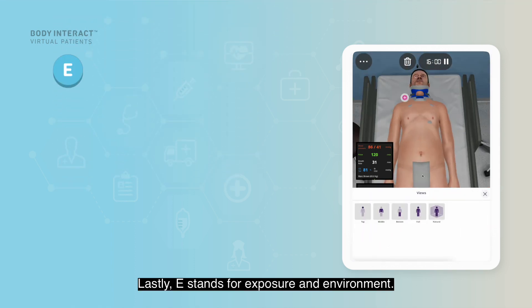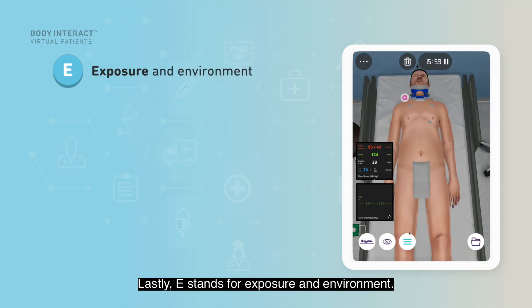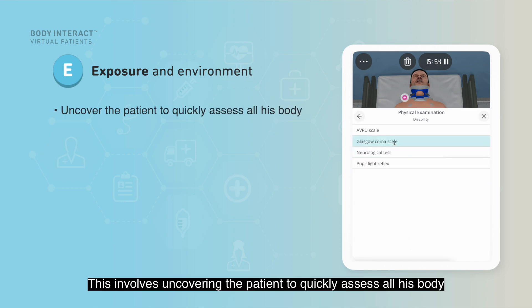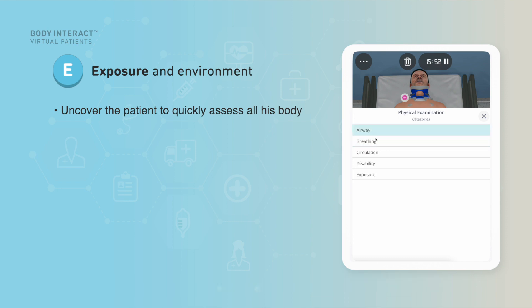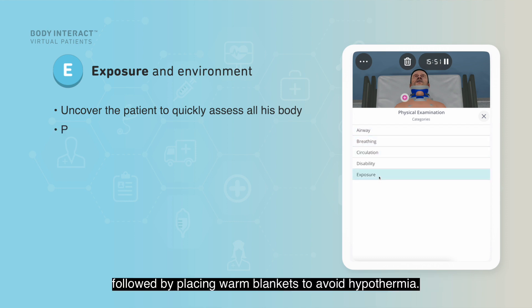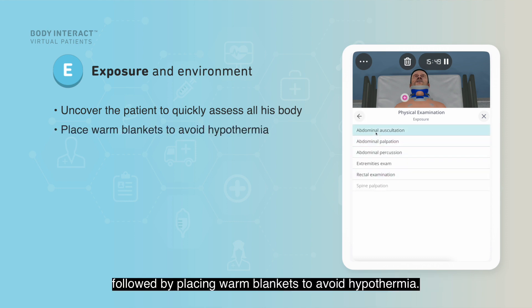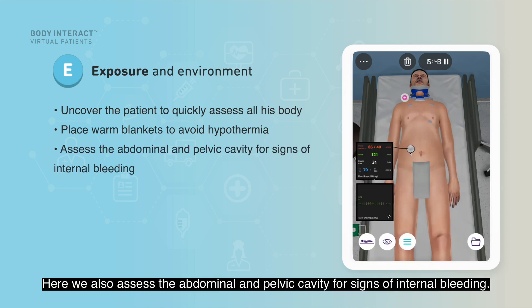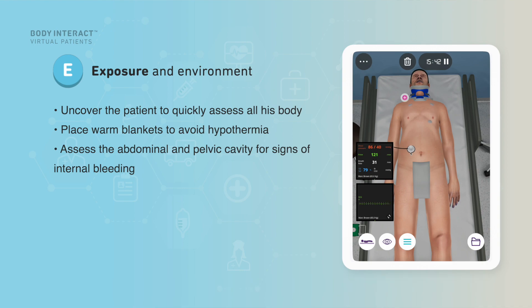Lastly, E stands for exposure and environment. This involves uncovering the patient to quickly assess all of his body, followed by placing warm blankets to avoid hypothermia. Here, we also assess the abdominal and pelvic cavity for signs of internal bleeding.